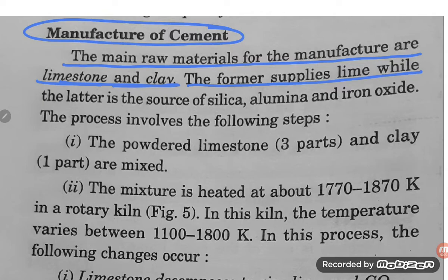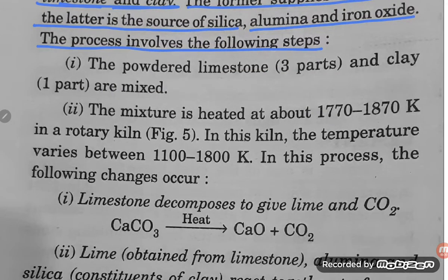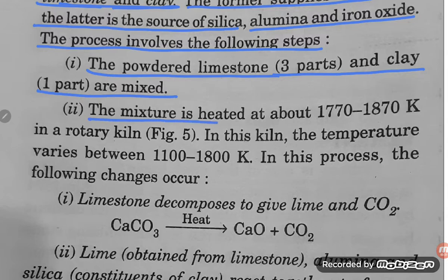Limestone supplies lime, while clay is the source of silica, alumina, and iron oxide. In the first step, powdered limestone (three parts) and clay (one part) are mixed in a 3:1 ratio. The mixture is heated at around 1770 to 1870 Kelvin in a rotary kiln.